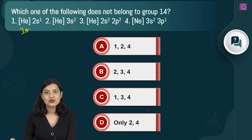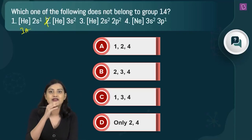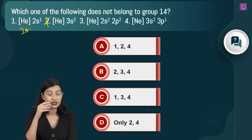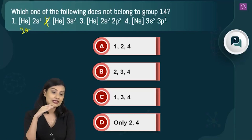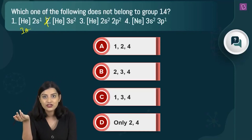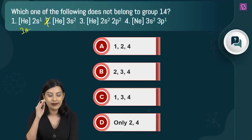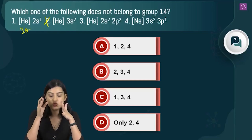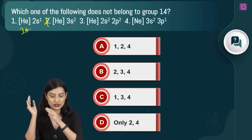Helium 3s2 is not a real electronic configuration because after helium you need 2s, then 2p, then 3s. This skips subshells, so it is not a correct electronic configuration and can be discarded.